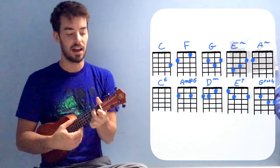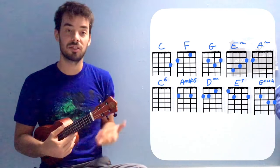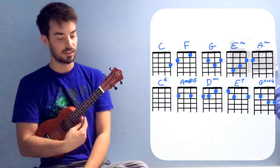For example, C, F, G, E minor even, A minor. Now C6 is just everything open, that's a C6.